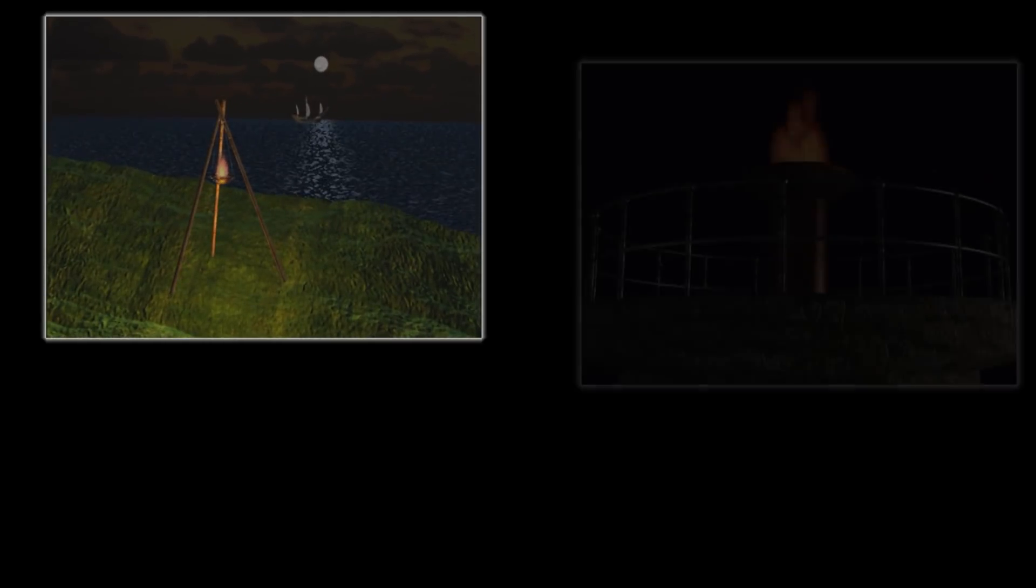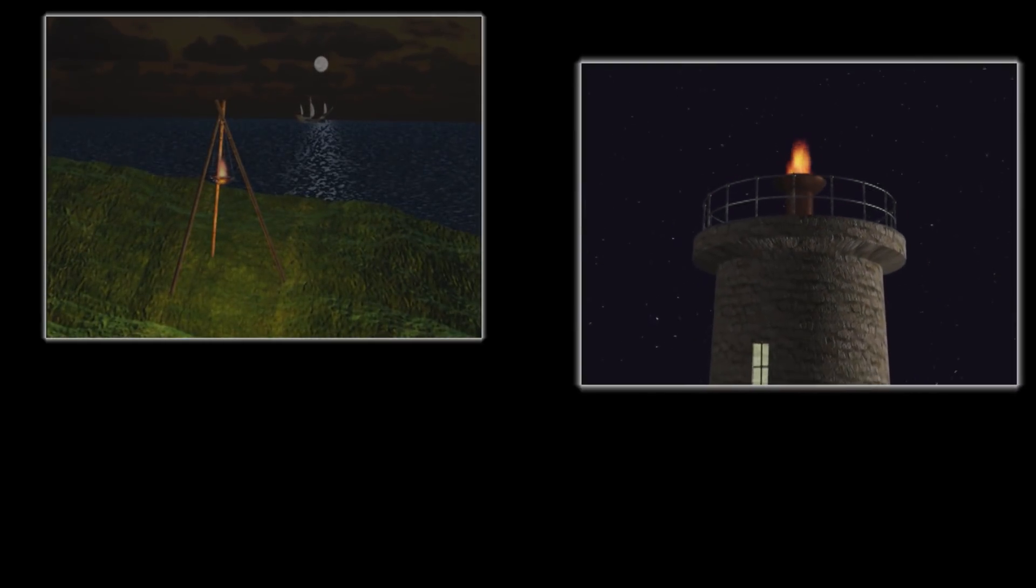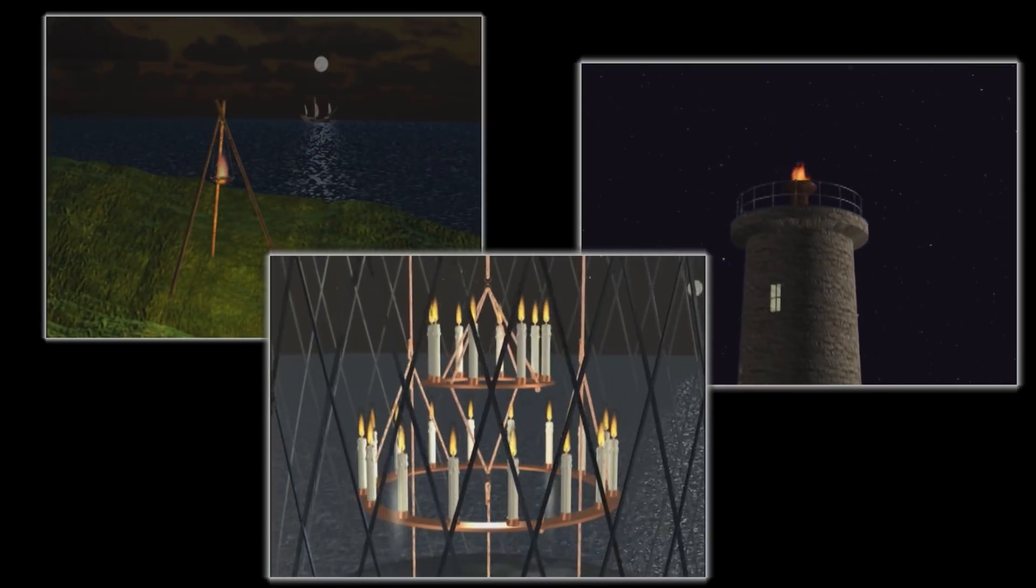Early lighthouse illumination evolved over the years from wood fires to tallow candles, then various forms of oil lamps.